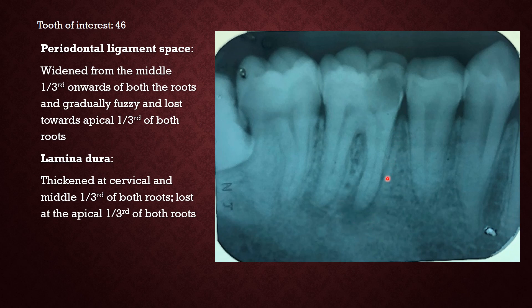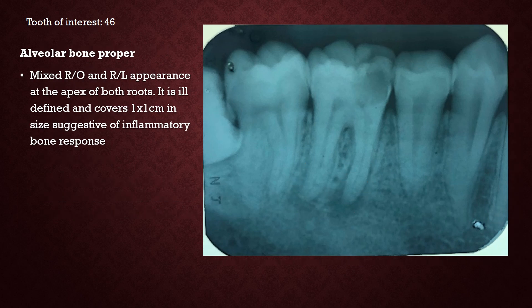The lamina dura can only be observed as thickened on the cervical and middle aspect of the root. The alveolar bone proper is the most important area of interest here. In this radiograph, you see a mixed radio-opaque and radiolucent appearance involving both roots. It is quite well-defined in terms of radiolucency but towards the periphery it becomes very fuzzy, mixed, and blending into a more radio-opaque appearance of the bone — suggestive of an inflammatory bone response. The entire size of the lesion is around 1 cm or a little more. The yellow arrow marks point to the more radiolucent part and the blue arrow marks point to the more radio-opaque part of the lesion.